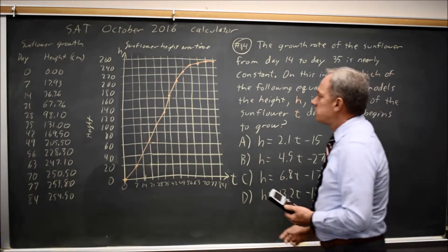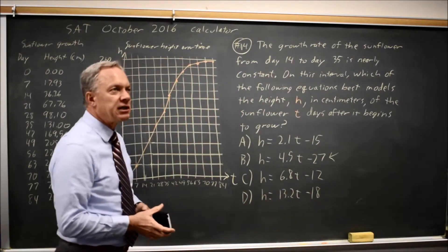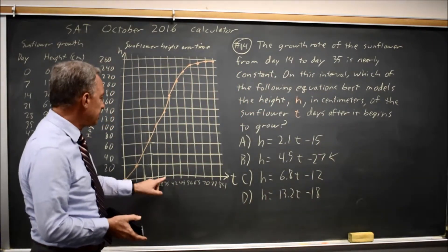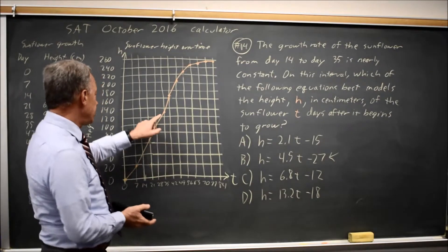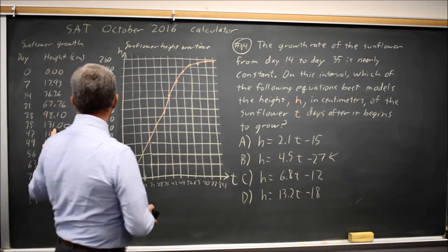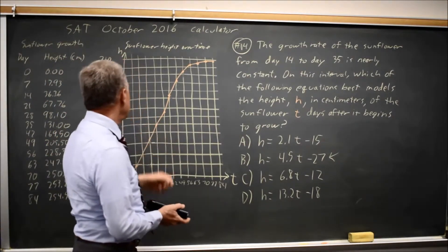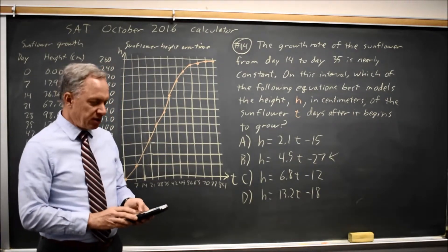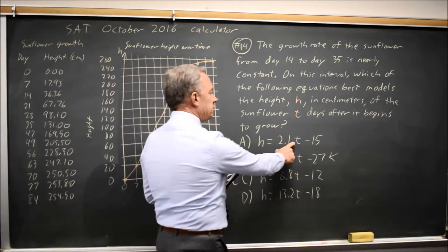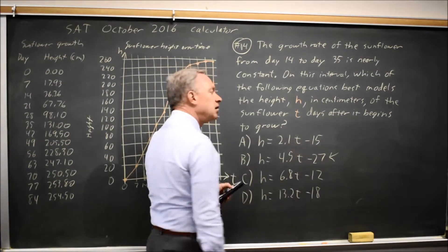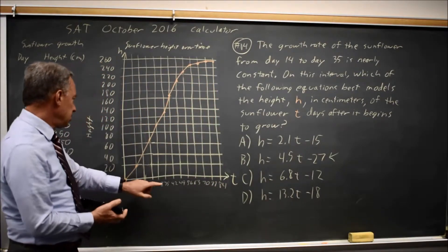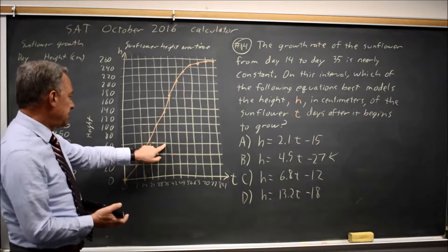Alternatively, I can see which equation predicts the height correctly at some point during this time period. I'm going to use T equals 35. I should get an answer of about 131 according to the table, and that's about what it looks like on the chart also. So if I do 2.1 times 35 minus 15, I get a height of only 58, which would be down here.